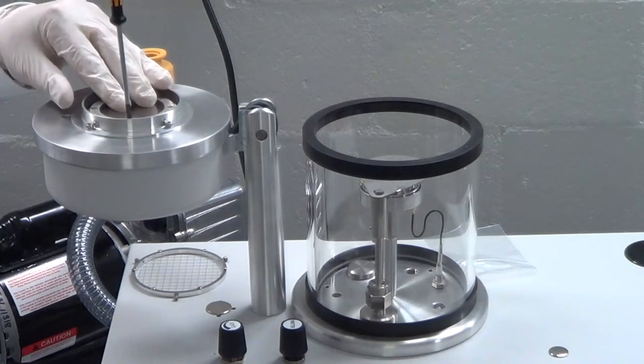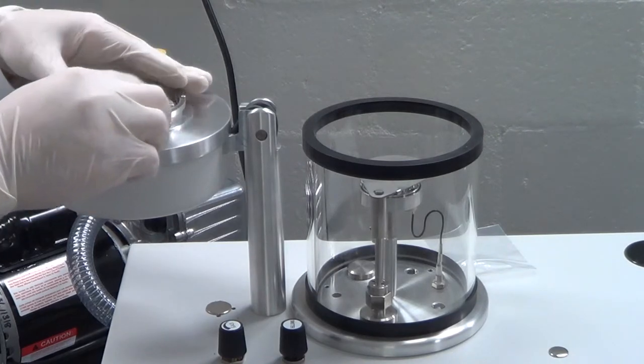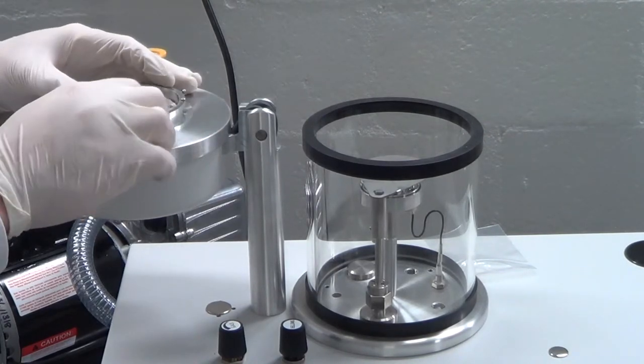Once you are satisfied with the placement of the target, tighten the four screws. Reattach the grid with the thumb screws and close the lid.